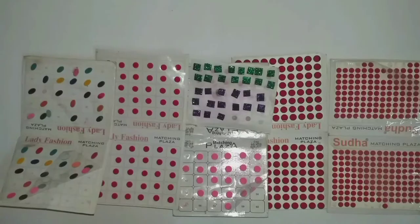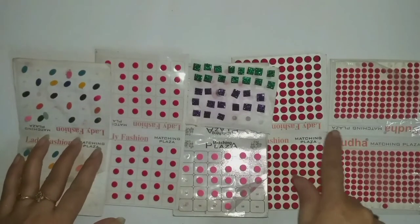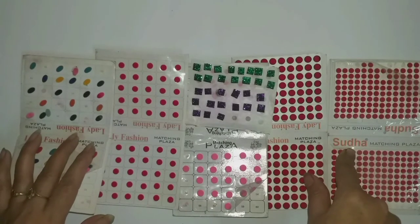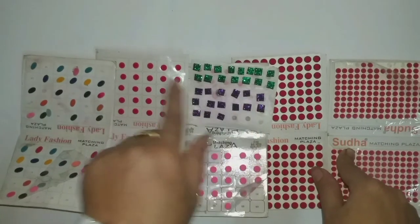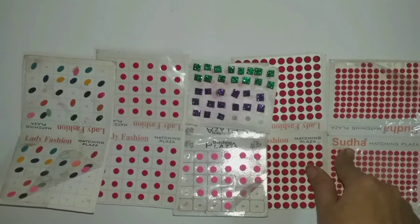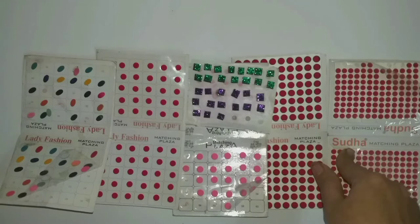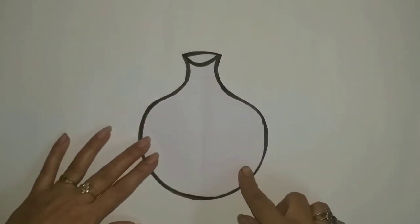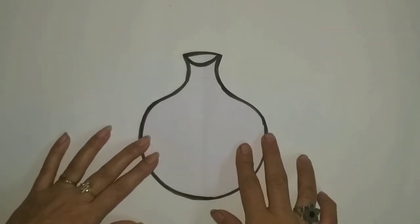Let's do it. We have used different colors of cotton, and their shapes are also different. You can use any color of cotton. First of all, we will draw a matka on a plain sheet, and then we will decorate it with cotton.